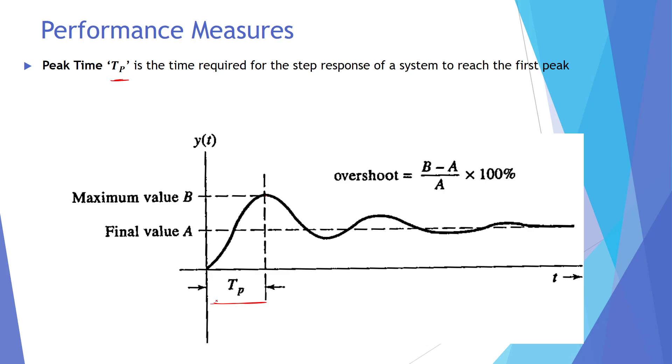Peak time is measured from when the final value is reached. The maximum value jo humarepaas hai, for any stable system, the maximum value of the response will be achieved during the first peak. So pehli overshoot ke ander jo hai, that is always the first maximum peak.